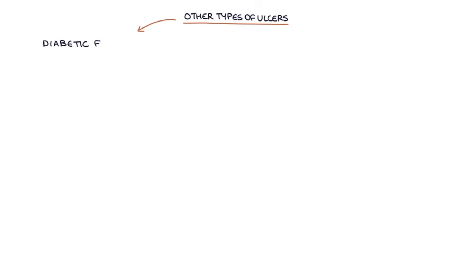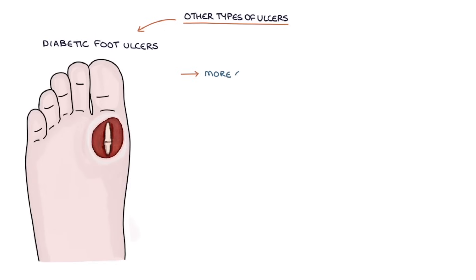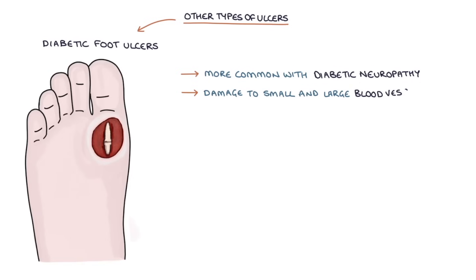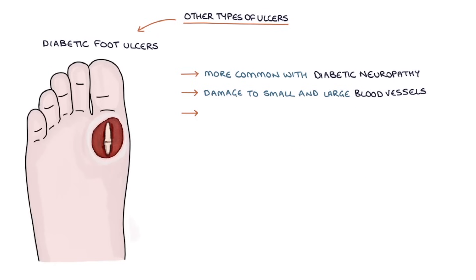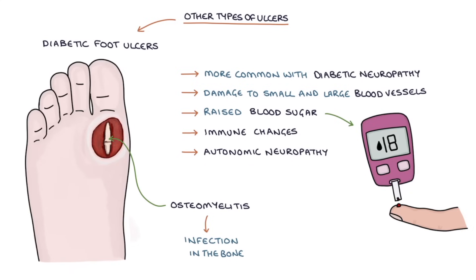Before we talk about arterial and venous ulcers, let's talk about some of the other types, specifically diabetic foot ulcers and pressure ulcers. Diabetic foot ulcers are more common in patients with diabetic neuropathy. Patients who have lost sensation in their feet are less likely to realize they've injured their feet, or they may have poorly fitting shoes they don't realize are poorly fitting. Additionally, damage to both the small and large blood vessels impairs blood supply and wound healing. A raised blood sugar level, immune changes, and autonomic neuropathy also contribute to ulceration and poor healing. Osteomyelitis, which is infection in the bone, is an important complication of diabetic foot ulcers.